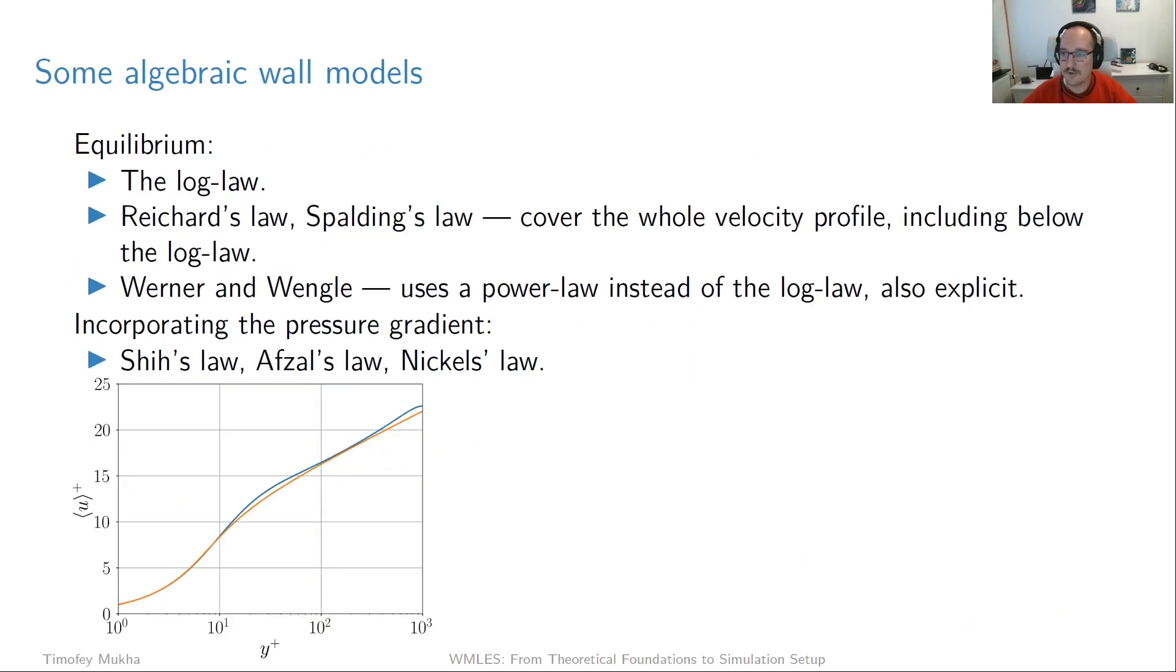So what are some of the other algebraic wall models besides this log law? So there are several models which are equilibrium, meaning that they don't account for the pressure gradient and acceleration term, which sort of build on the log law somehow. So two examples of this is Reichardt's law and Spalding's law. And the idea with these two is that they cover the log law, but they also cover what is beneath it. So you get sort of an approximation of the whole profile from the wall and up to the end of the log law. The good thing about that is that, for example, if there is some kind of complicated flow and you don't really know how to set the sampling point, it may be so that you're closer to the wall than the log law. And then it's good that your wall model still is sort of applicable.